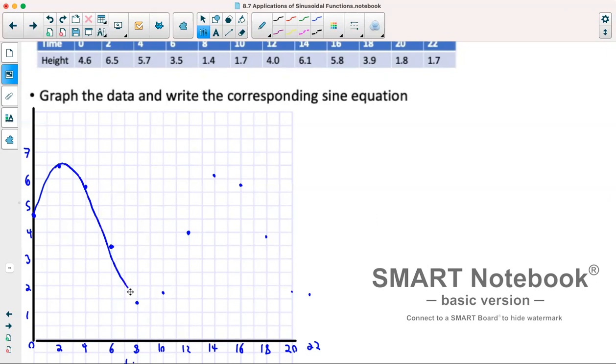So graphing this we have something that looks something like this. Now we had two y values that corresponded. So at 10 we were at 1.7, at 22 we're also at 1.7. So because those points appear to be corresponding, we'll take that to be our period. So 10 to 22 would be a period of 12.